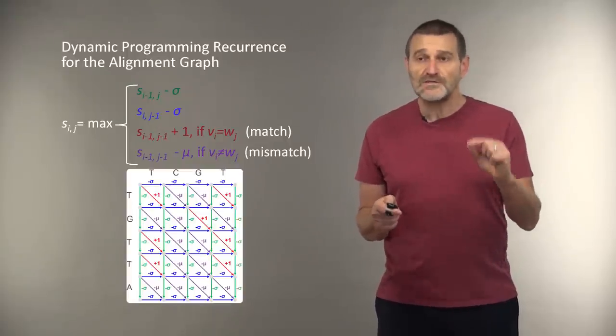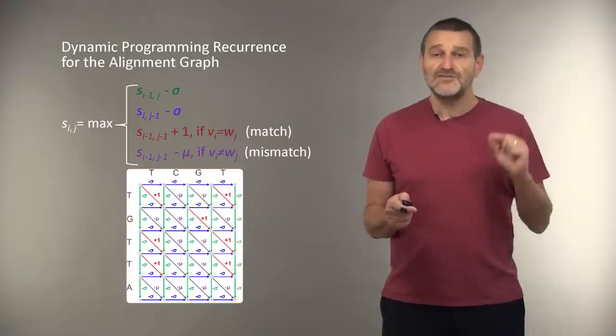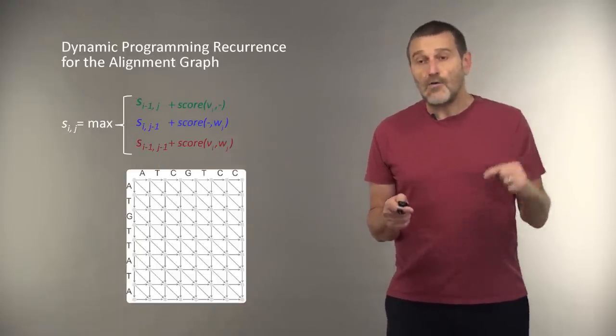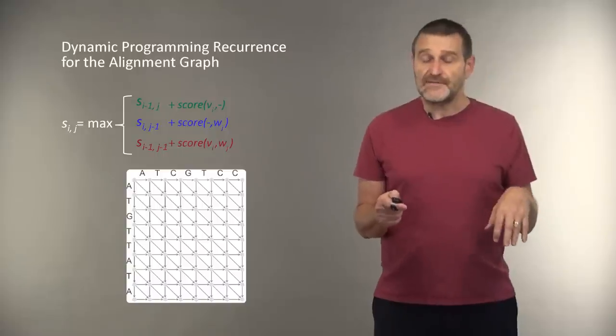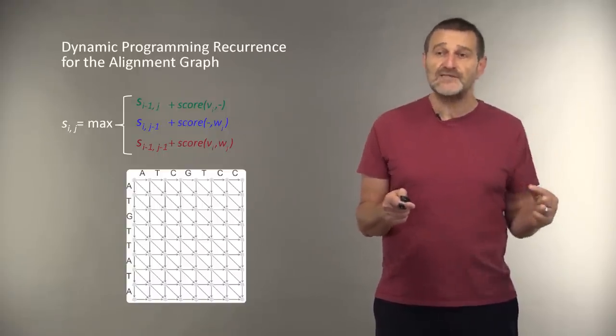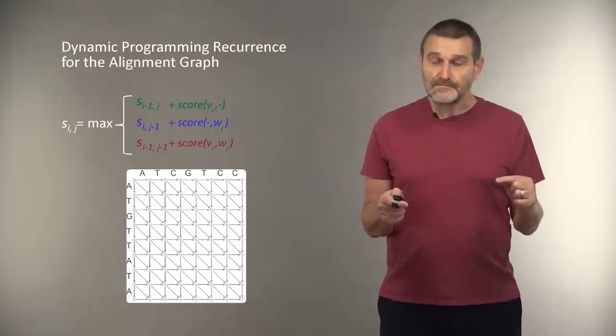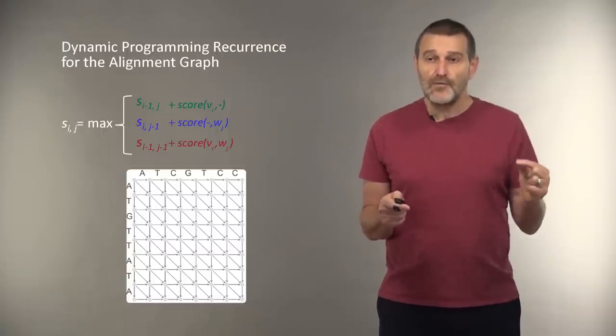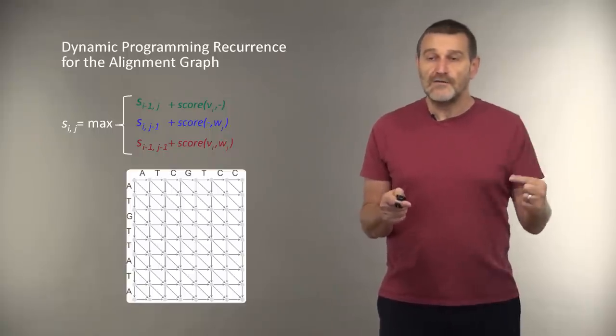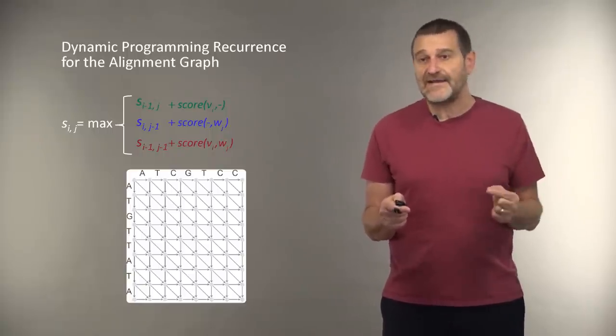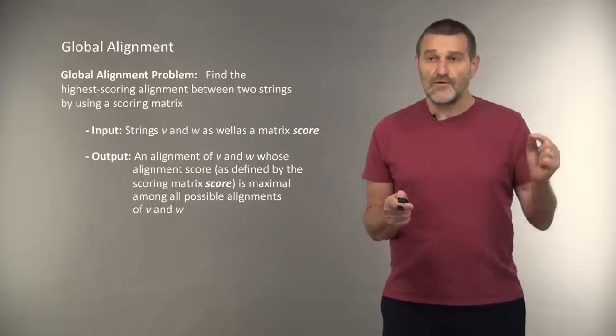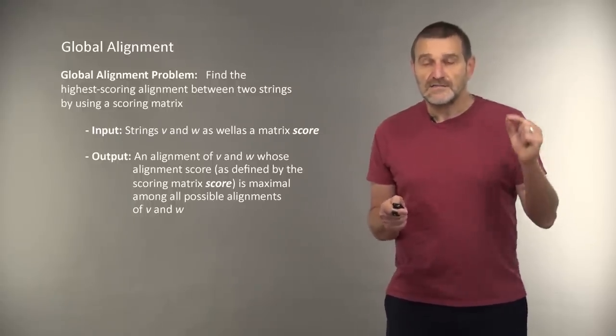And the scores of edges in the alignment graph change accordingly, as shown on this slide. Or, alternatively, we can, for very general scoring matrix, we simply can write three terms recurrency, where green, blue, and red alternatives correspond to vertical, horizontal, and diagonal edges. And global alignment problem that we want to solve is the following one.